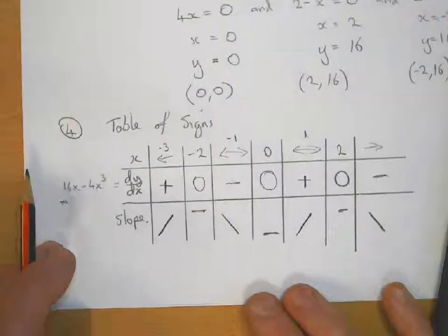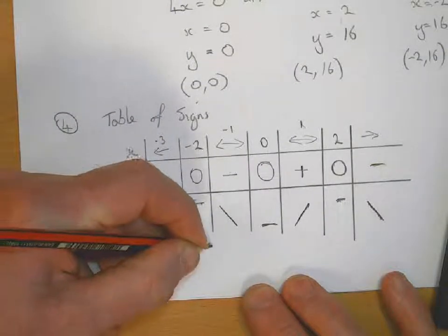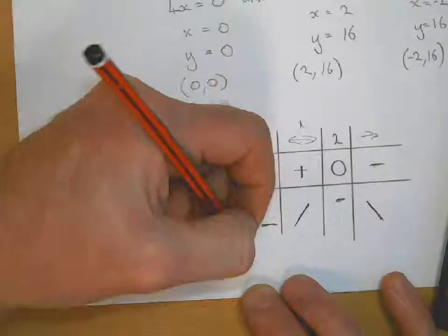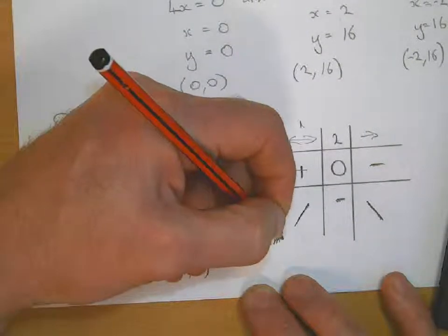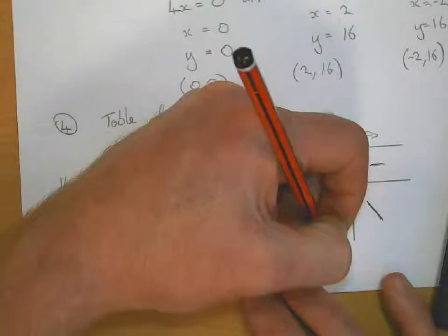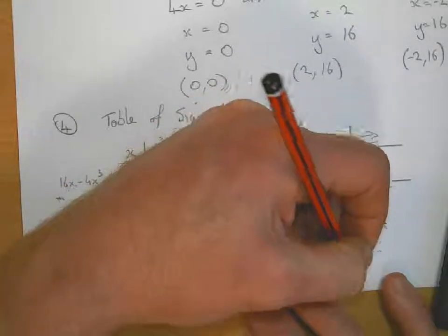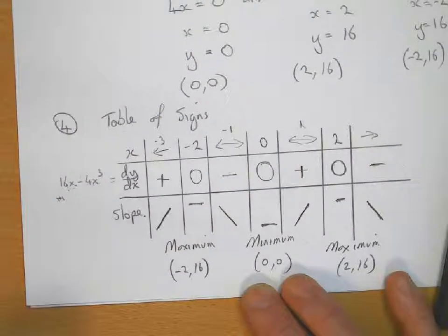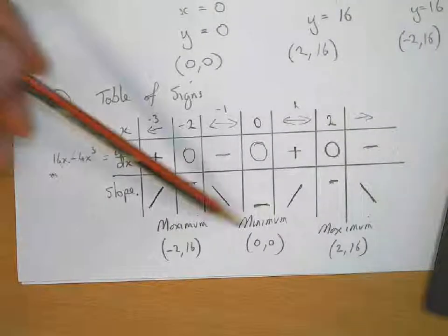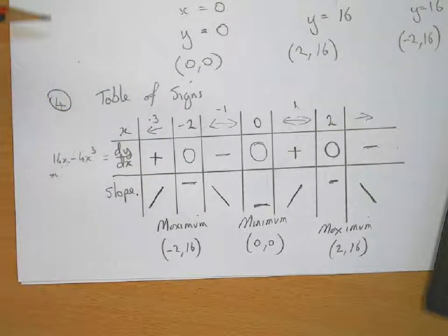To finish off we write down what we know: there is a maximum at (minus 2, 16), a minimum at (0, 0), and a maximum at (2, 16). So we have the turning points, the nature of the turning points, and where the curve cuts the x-axis and y-axis.